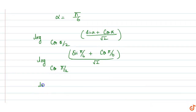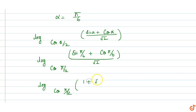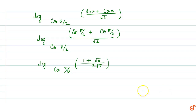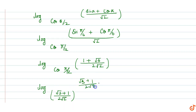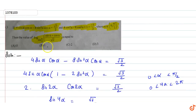तो यहां से value होगी: log base cos(π/12) of (1/2 + √3/2) / √2 यानि (1 + √3) / (2√2). और cos(π/12) की भी value (√3 + 1)/(2√2) होती है। तो base और argument दोनों same हैं, तो इसकी value 1 के equal आ जाएगी। तो correct option B है।